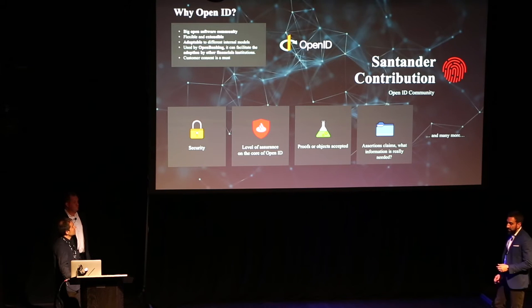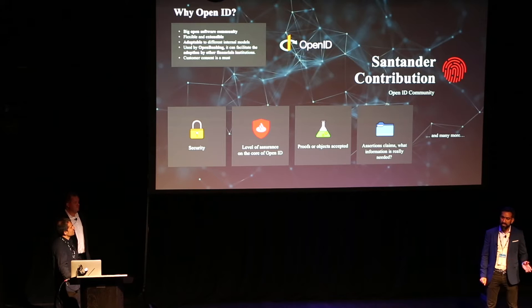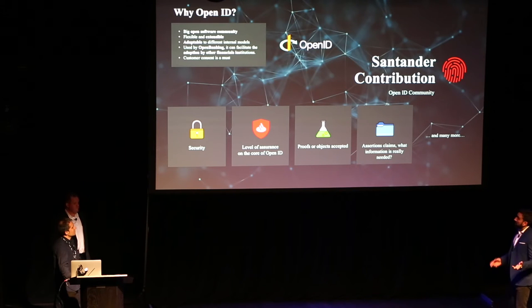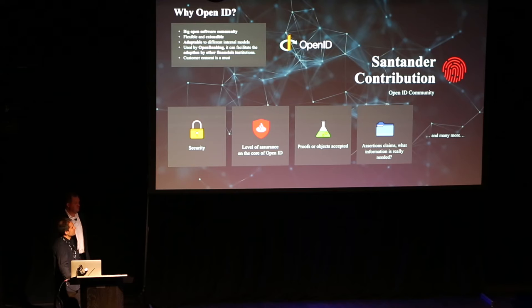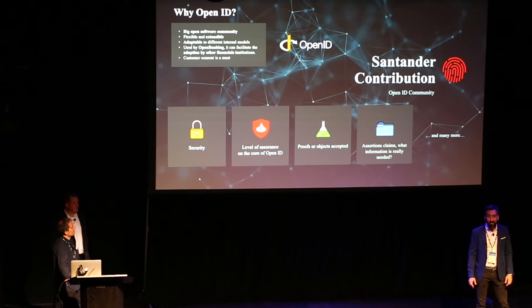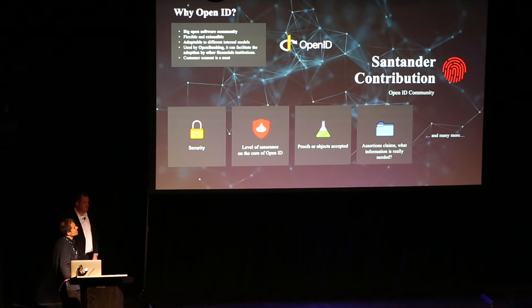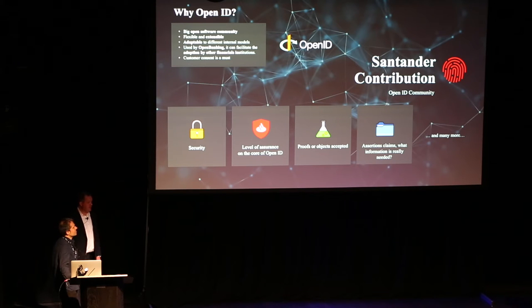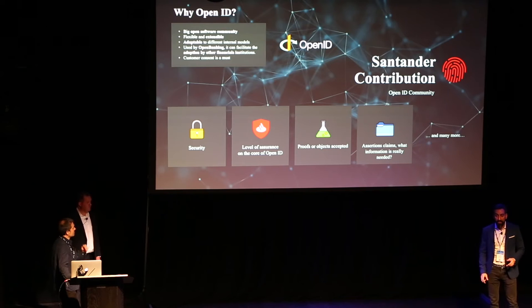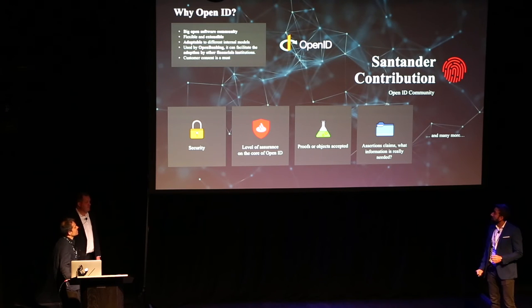We chose OpenID because they have a massive community — as of 2016, more than 6 million registered accounts. They are flexible, extensible, and adaptable for different internal systems, supporting all the different tokens and JWS we need for security. It has been used for open banking: the CMA regulation required the nine biggest banks in the UK to make data available to trusted fintechs via APIs. The fact that OpenID was already being used by fintechs was a really important point in our decision.